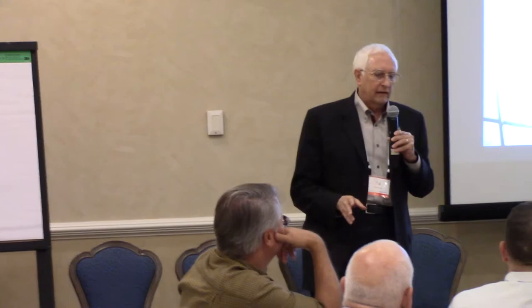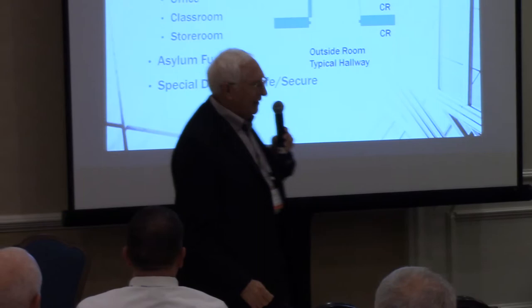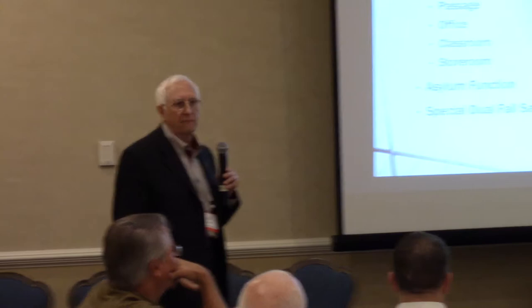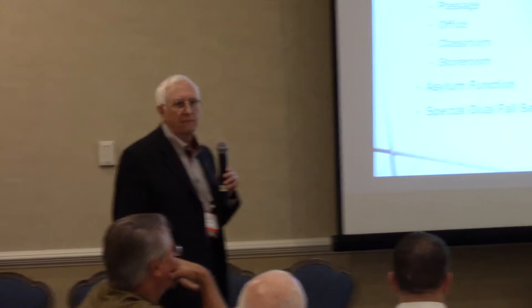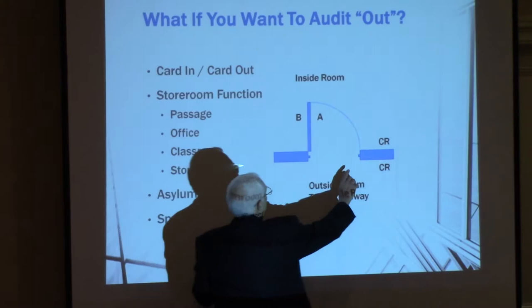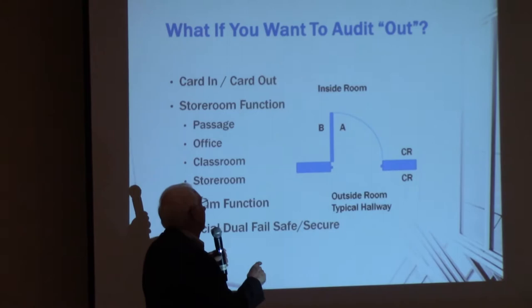Classroom function — I remember copying my first key in third grade for a classroom lock. A classroom lock requires a key to change its state: by locking the A side with a key from outside, you change it to a locked or unlocked state. Most of our security applications use a storeroom function concept. In a storeroom, you put the key in the outside, turn it, you can open the door, but when the key is back in your hand the door is locked. An asylum function locks both the A and B sides — that's a special occupancy function.